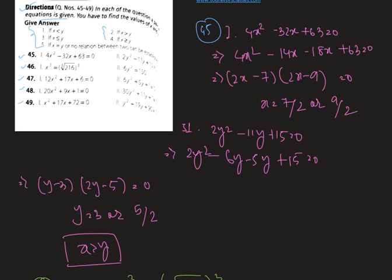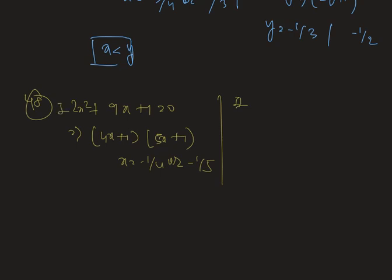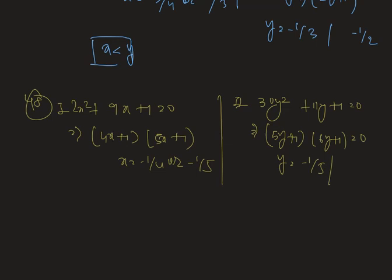Now question number 48: we have two quadratic equations. The first is 20x² + 9x + 1 = 0. After factorizing, we get (4x + 1)(5x + 1) = 0, so x = −1/4 or x = −1/5. From equation 2, we have 30y² + 11y + 1 = 0. After factorizing, we get (5y + 1)(6y + 1) = 0, therefore y = −1/5 or y = −1/6. Hence x is less than or equal to y.